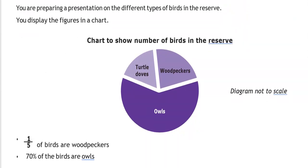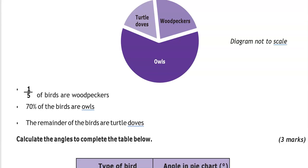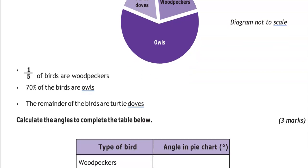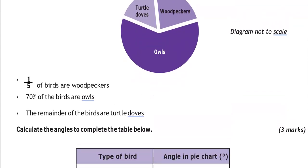You're preparing a presentation of the different types of birds in the reserve. You display the figures in a chart. Chart to show a number of birds in the reserve. We've got woodpeckers, owls, turtle doves. Diagram is not to scale, so you can't really use a protractor to measure any angles here. And then we've got 1/5 of birds are woodpeckers, 70% of the birds are owls. The remainder of the birds are turtle doves. Calculate the angles to complete the table below.